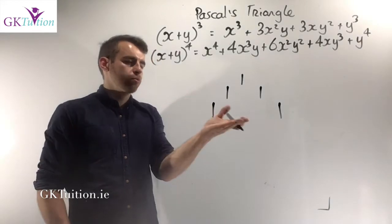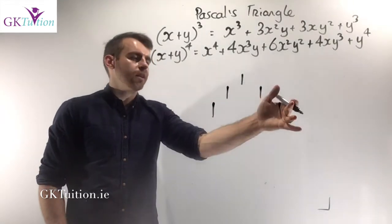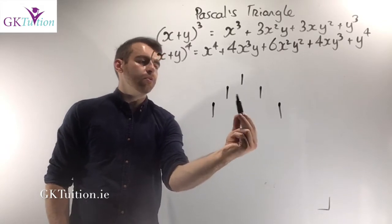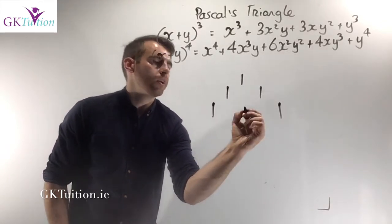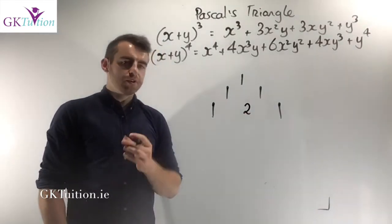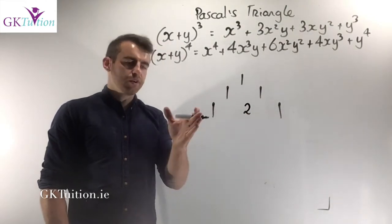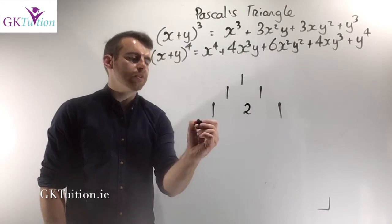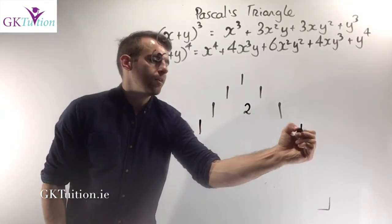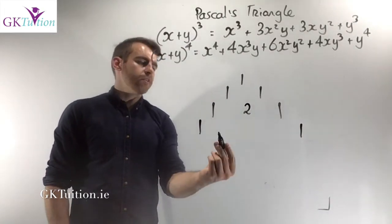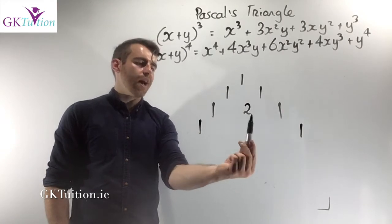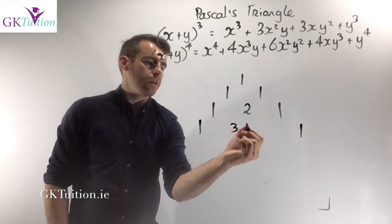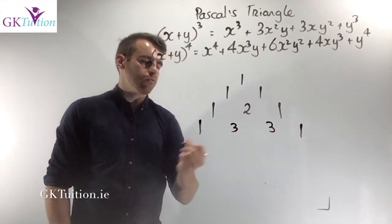In the third row there are three numbers. The first one is a 1 and the last one is a 1. To work out what the middle one should be, I add up the two numbers above it. 1 plus 1 gives me 2. So the third row in Pascal's Triangle is 1, 2, 1. The fourth row has four numbers. The first will be a 1 and the last will be a 1. The two middle numbers I find by adding the numbers above: 1 plus 2 gives me 3, and 2 plus 1 also gives me 3.